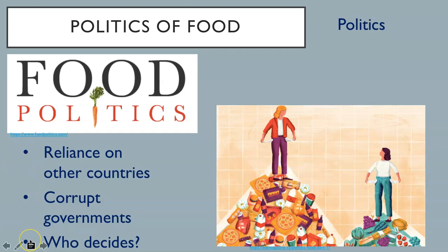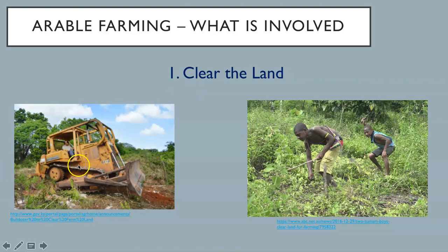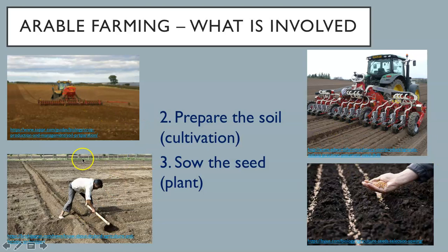Now let's talk about food production systems and cover some basics. Here is a quick summary of what is involved in growing crops. First, you have to clear the land — this can be done with machines or manually. Second, you need to condition the soil by breaking it up and plowing it or digging it over — this is called cultivating the soil. Third, you need to plant the seeds, again whether with machines or by hand. Fourth, you help your crops to grow by treating for weeds and pests, and you might also add fertilizer. Finally, the harvest can be done — the actual removal of the biomass from the field, the soil, and the ecosystem.